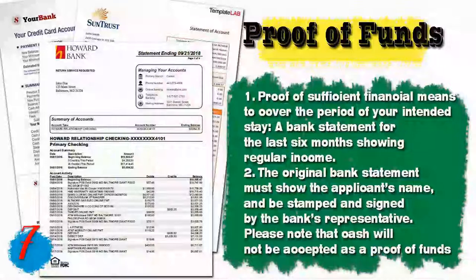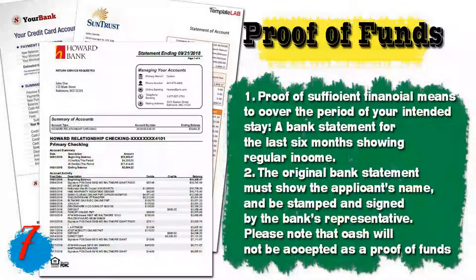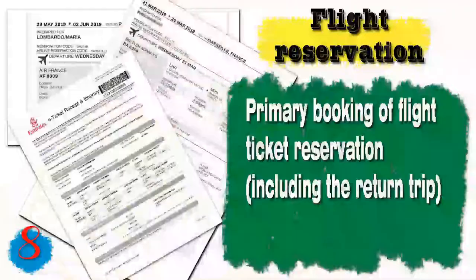Number seven, you will need a proof of funds — proof of sufficient financial means to cover your intended period of stay. Provide a bank statement for the last six months showing regular income. The original bank statement must show the applicant's name and be stamped and signed by the bank's representative. Note that cash will not be accepted as proof of funds. If you don't have a bank account, proof of any assets can also be presented.